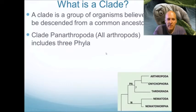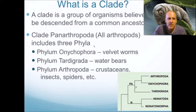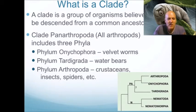Pan Arthropoda means 'all arthropods' and it includes three phyla: phylum Onychophora, which are the velvet worms; phylum Tardigrada, which are the water bears; and phylum Arthropoda, which are the crustaceans, insects, spiders, and so on — lots and lots of arthropods.